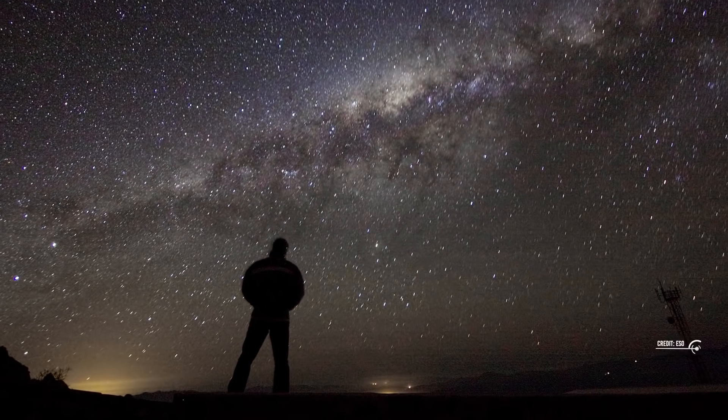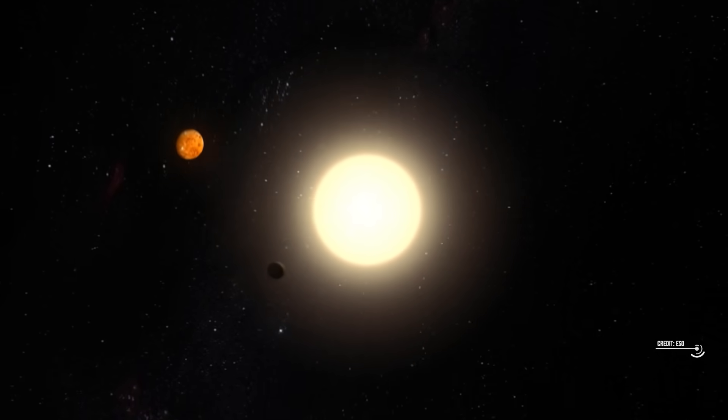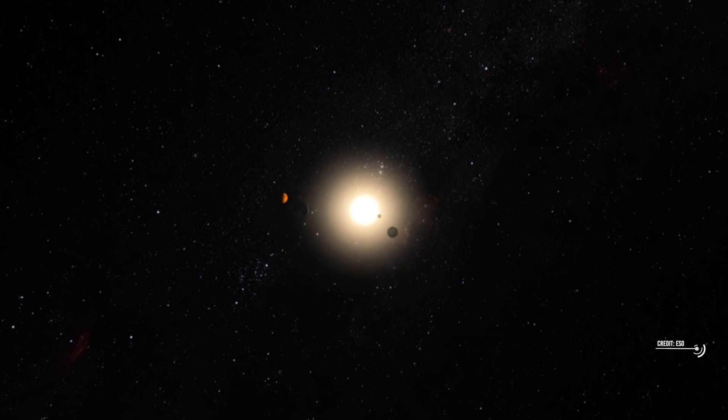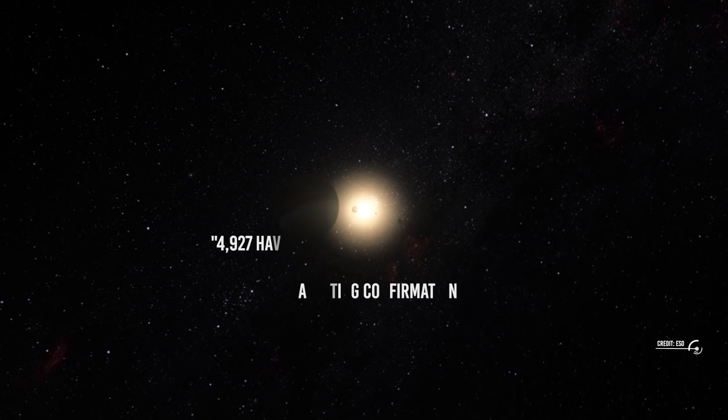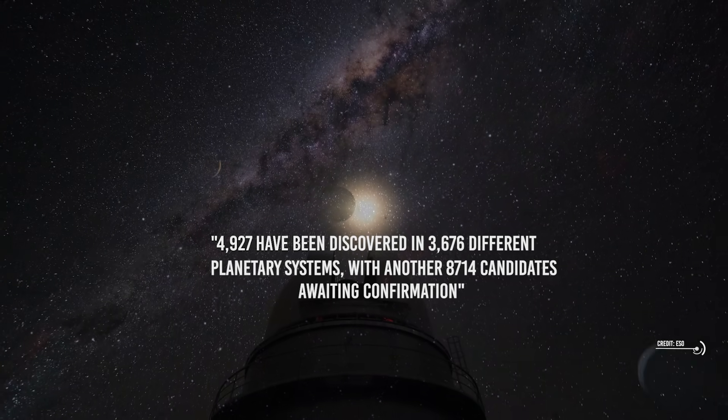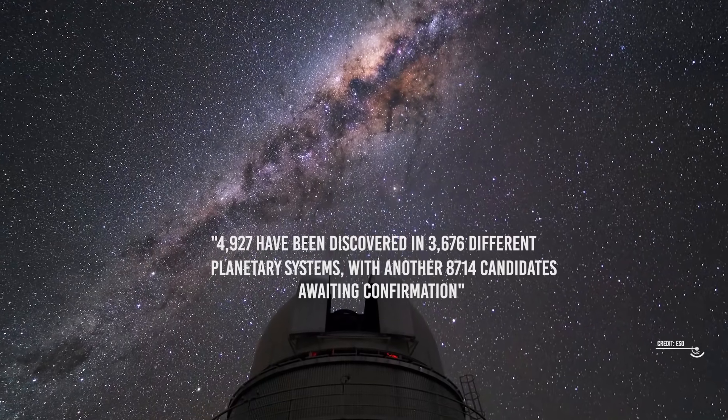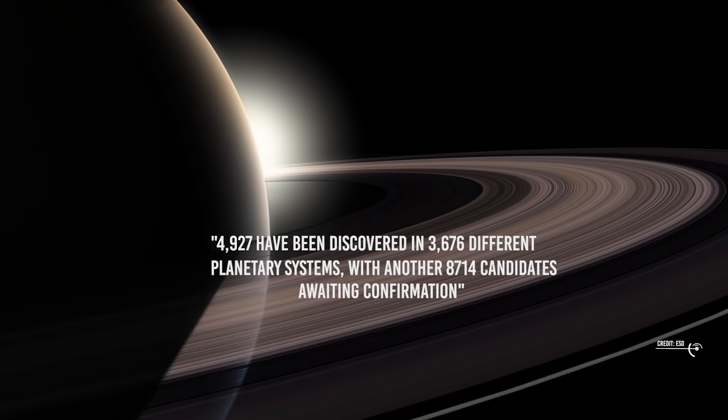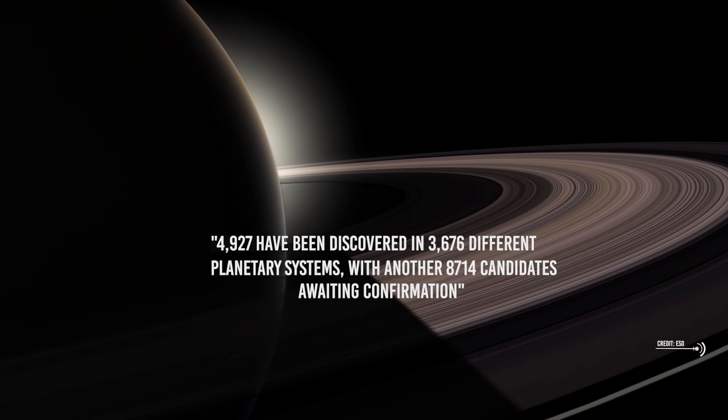Over the past three decades, the search for and study of extrasolar planets has made great progress. To date, 4,927 have been discovered in 3,676 different planetary systems, with another 8,714 candidates awaiting confirmation.